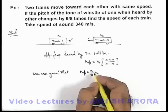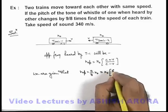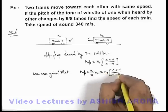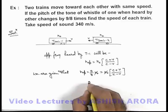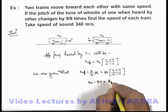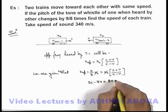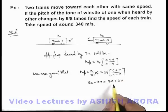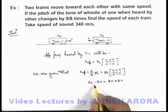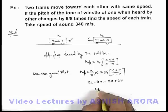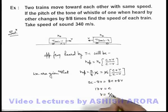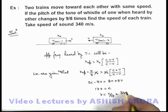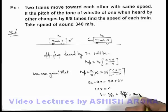Substituting the value of apparent frequency — n₀ × (c + v) / (c − v) = (9/8) × n₀ — n₀ cancels out. On solving: 9c − 9v = 8c + 8v, which simplifies to 17v = c. So v = c/17 = 340/17 = 20 meters per second. That is the answer to this problem.